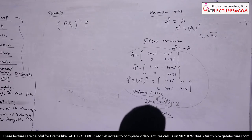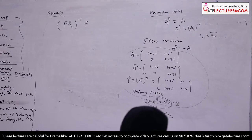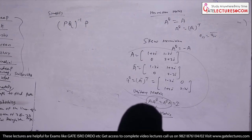From 2009 exam: a square matrix B is symmetric if — option A: B transpose equals B, option B: B transpose equals minus B, option C: B transpose equals 0, option D: B transpose times I equals I.